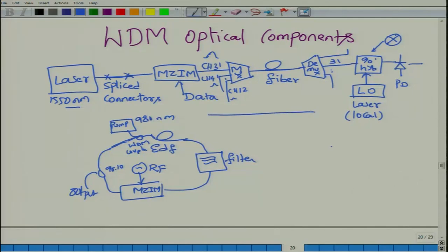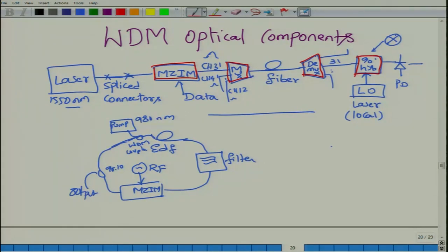This is a typical WDM system. The objects highlighted in red are what we usually refer to as the WDM components, available in the market and mass-produced. Their cost is very small, provided you are operating in the communication window. You use these WDM components to make up other fiber-optics-based systems.